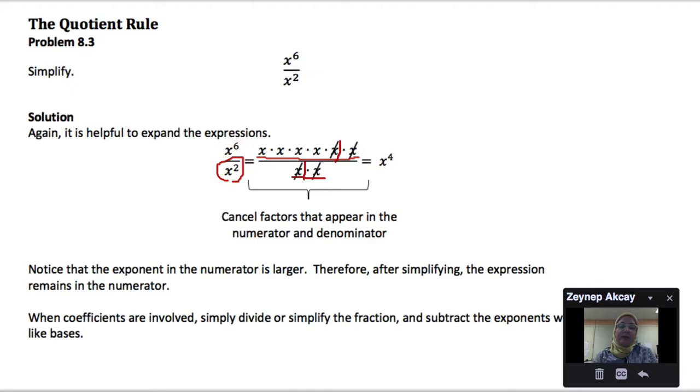The 2 factors in the denominator can cancel out with the 2 factors in the numerator, which leaves 4 factors of x multiplied. We can rewrite this in exponential form as x to the 4th.